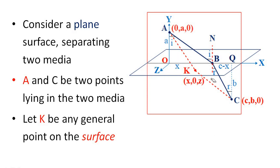Let K be a general point on the surface. We consider a general point K on the boundary surface, and we will consider the path of light as the general path A to K to C.